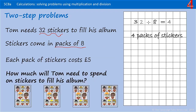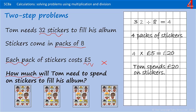But remember, this isn't the answer to the final question. The original question asks how much Tom will need to spend on stickers to fill his album. We know that he needs four packets of stickers and we know that they're each five pounds, so we need to multiply four by five, which is 20. Tom spends 20 pounds on stickers. Just check that that is the question we were asked to answer: how much will Tom need to spend on stickers?